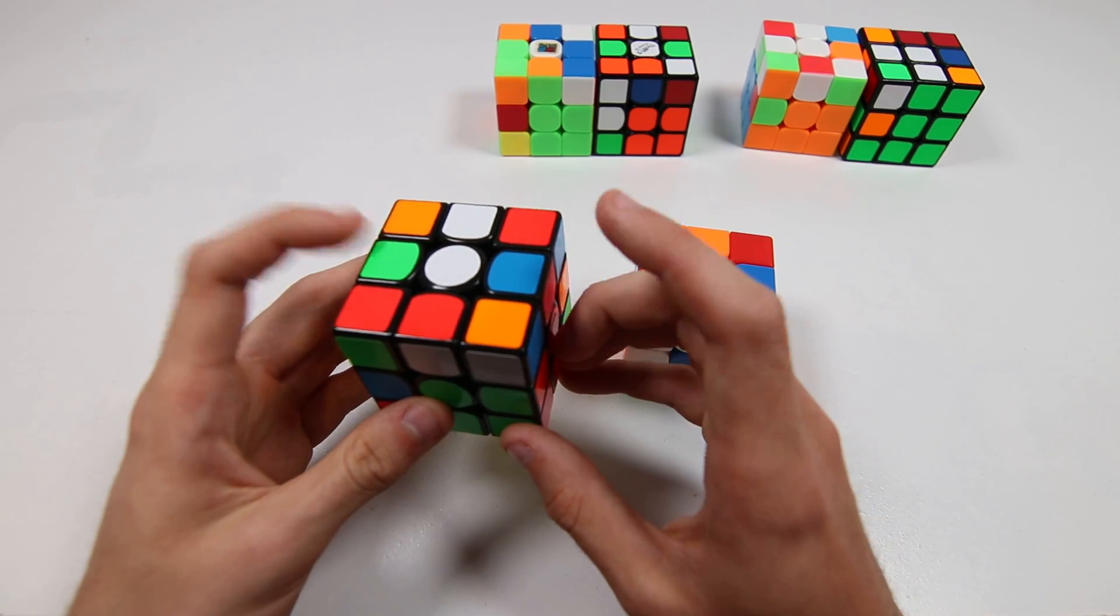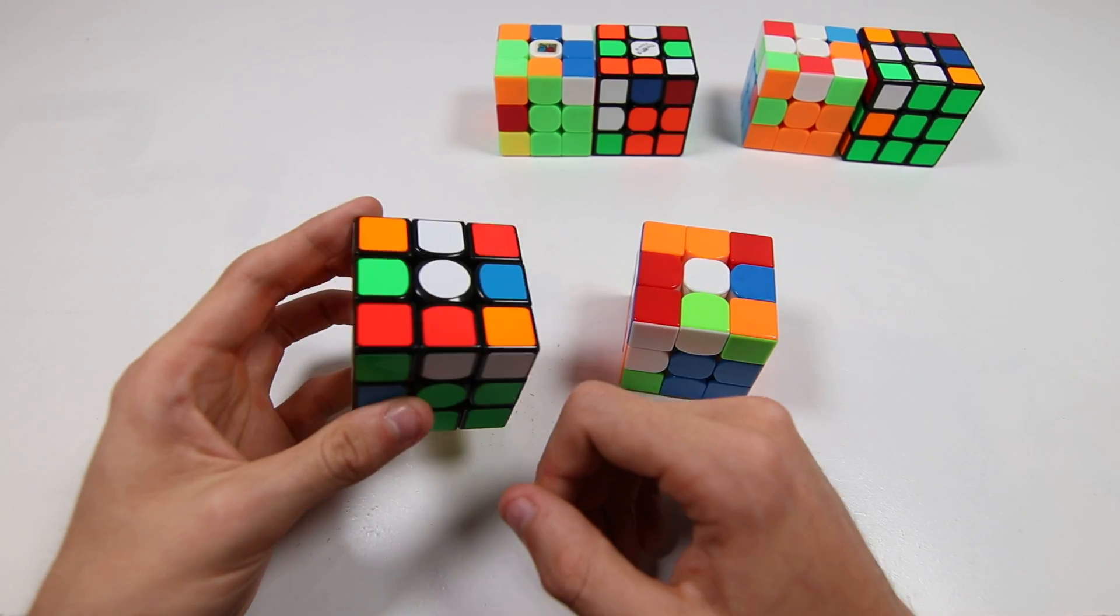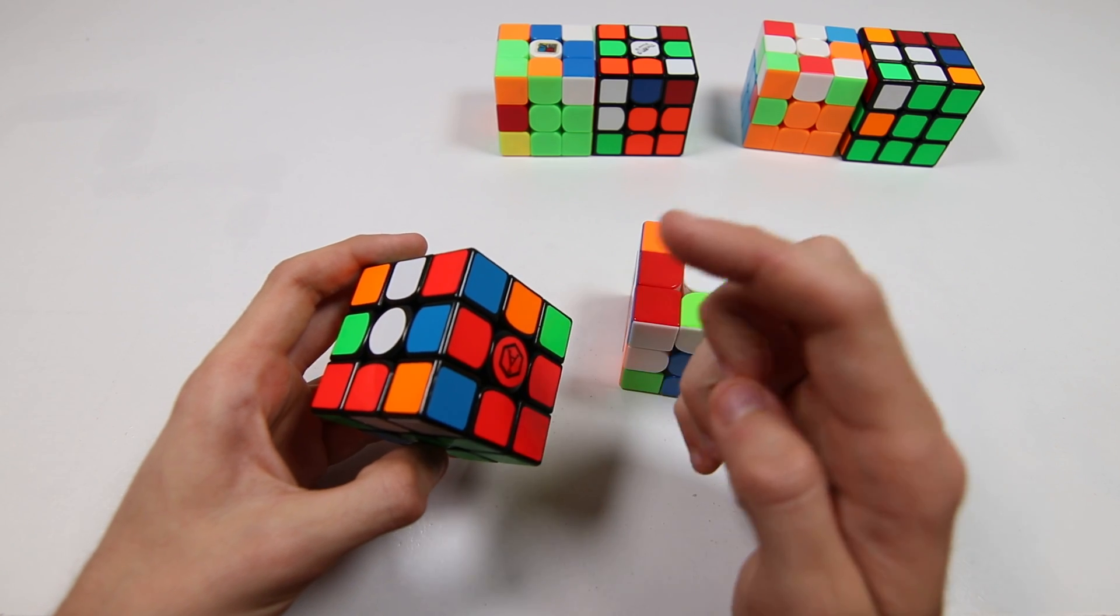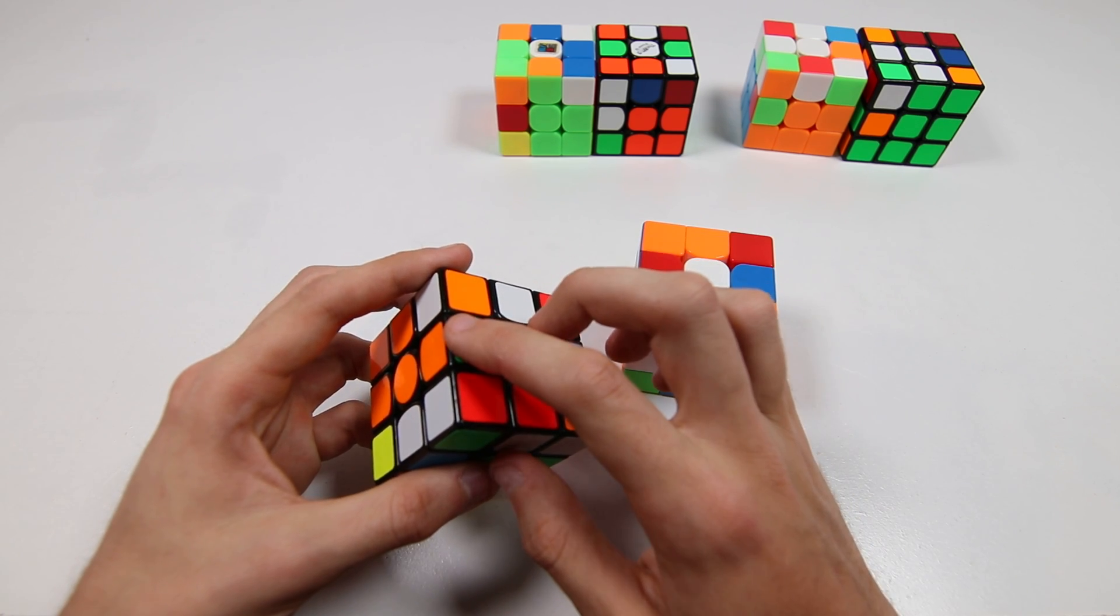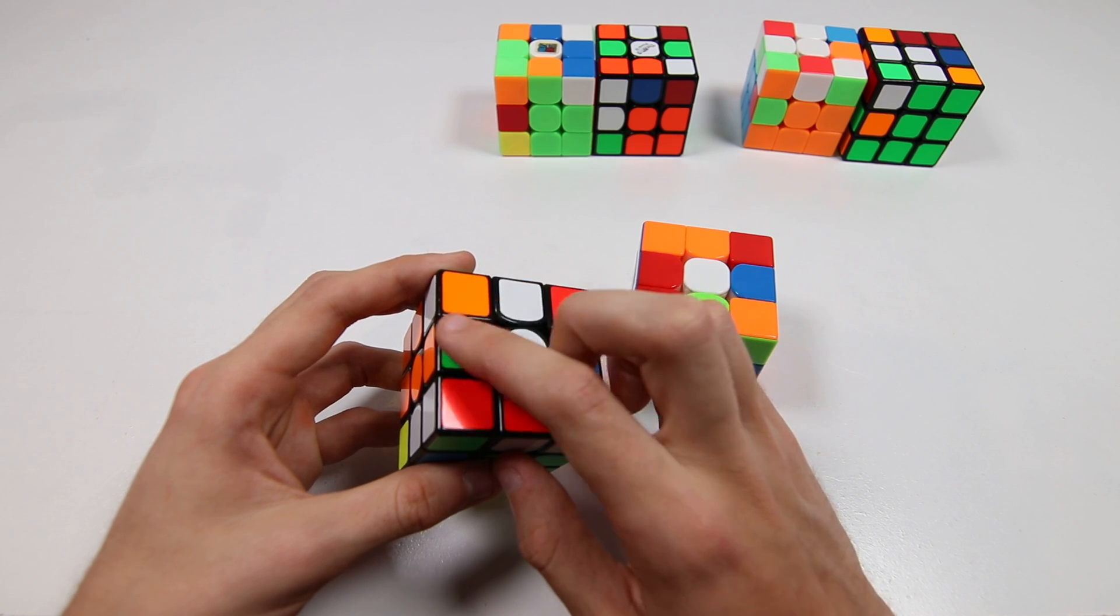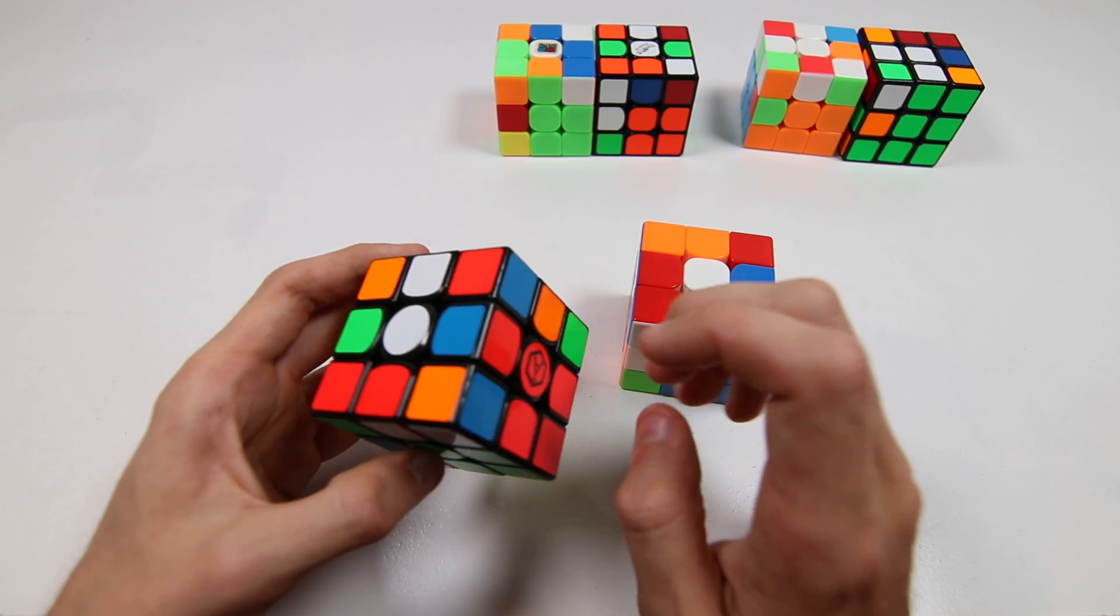So for this case, where we have edges oriented per ZZ law, BR is already oriented, so that's good, but this one is oriented, which is not good. FL being oriented is not good, so you want to flip it.